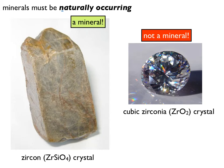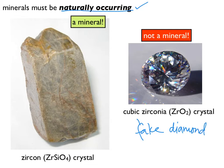Minerals must be naturally occurring. That means the planet earth has to make them. On the left we've got the mineral zircon, one of my personal favorites. On the right we've got a cubic zirconia — fake diamond — manufactured in laboratories. Cubic zirconia, or a solid with the formula ZrO2, is not naturally made by the earth, at least not in that structure. So cubic zirconia is not a mineral; zircon is a mineral.